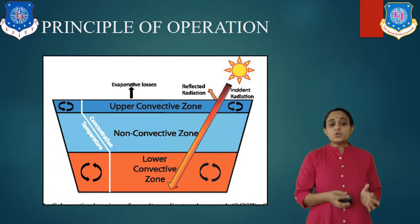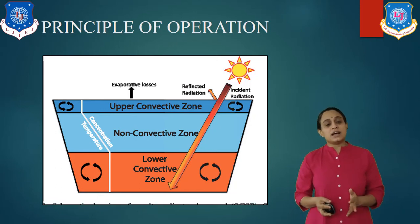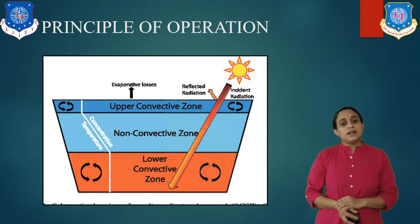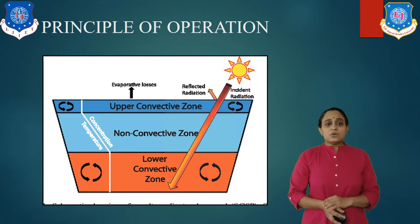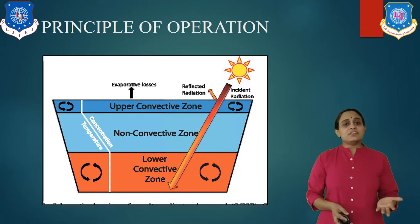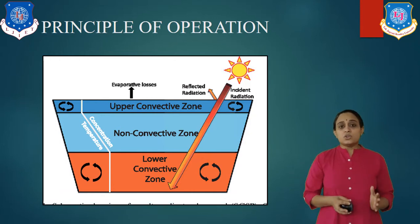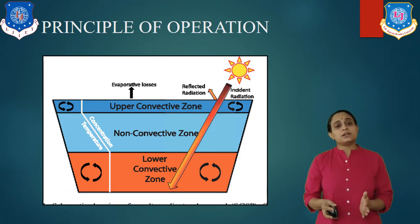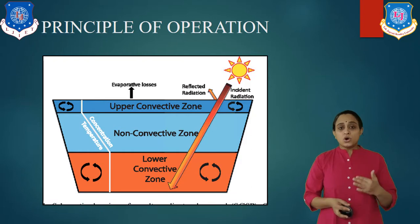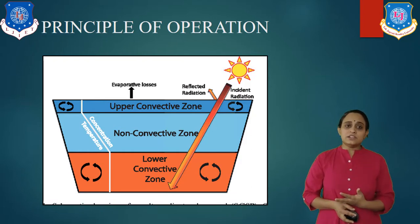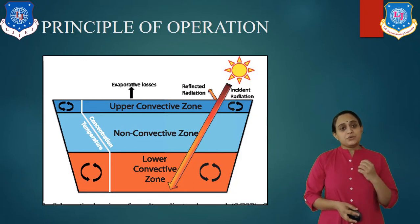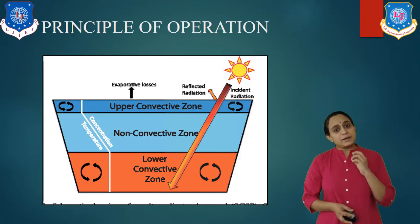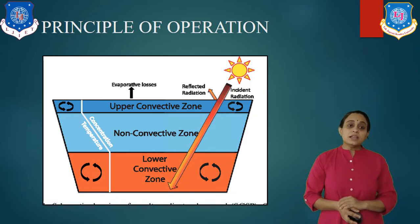The most commonly used salts are sodium chloride and magnesium chloride. The bottom layer is the convective zone with a constant salt level and acts as the storage of thermal energy. Hot water from the lower level goes into the heat exchanger where the working fluid absorbs heat from the hot water.